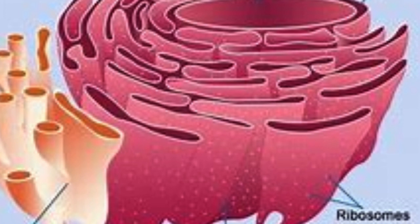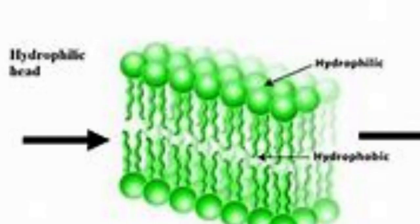The endoplasmic reticulum extends from the nuclear membrane to the plasma membrane. Its first type is smooth endoplasmic reticulum, or SER. Its surface looks smooth due to the absence of ribosomes. Its main function is to synthesize lipids — lipid biochemical reactions or lipid metabolism. For example, the synthesis of plasma membrane lipid molecules.